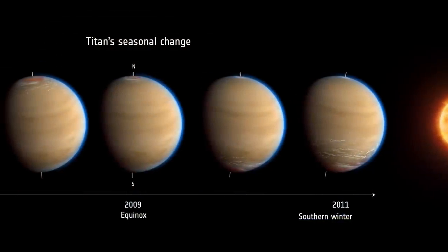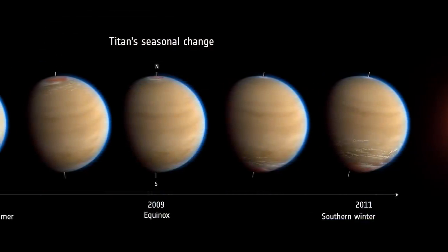Seasons ebb and flow on Titan, each lasting about seven and a half Earth years.